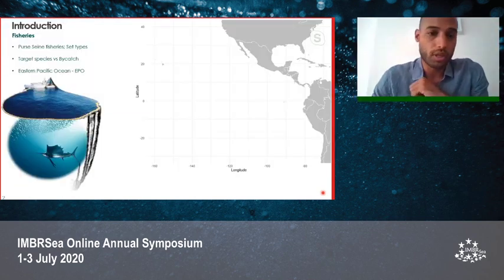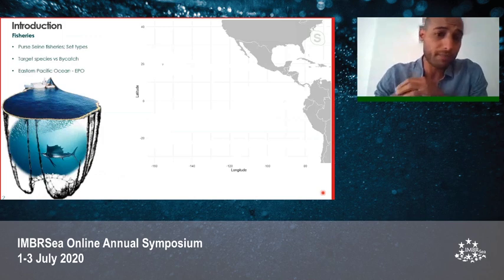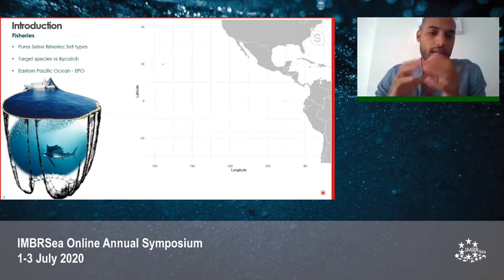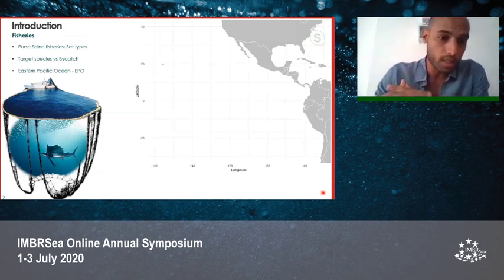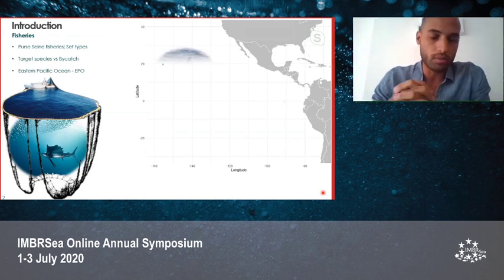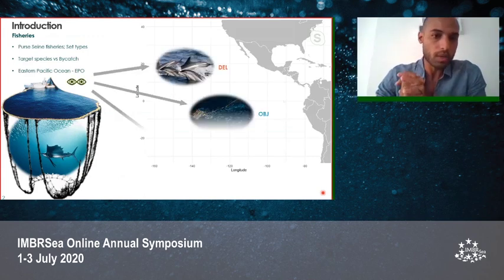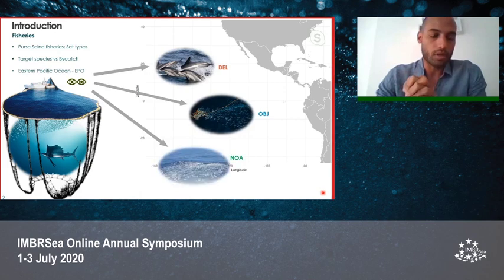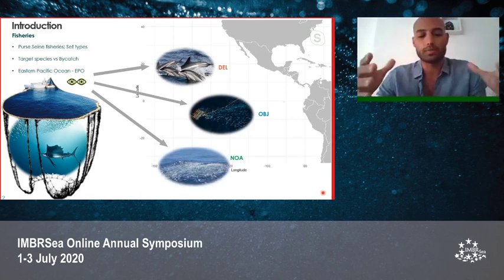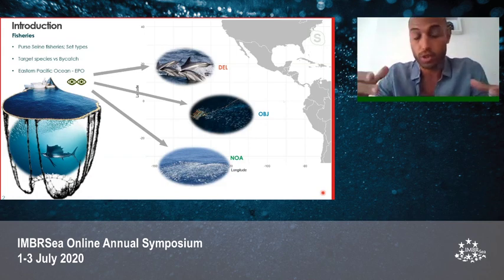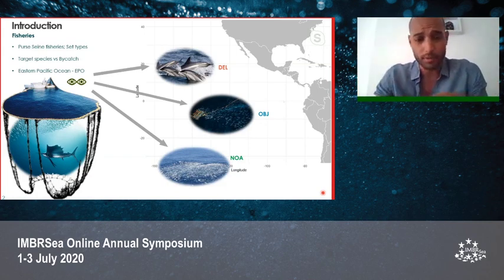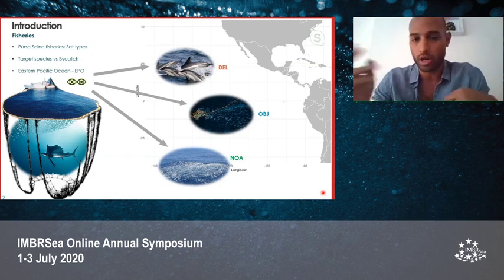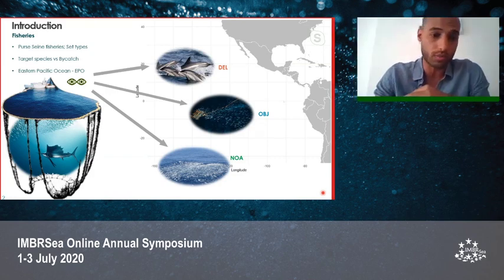For a brief introduction of the purse seine fisheries: it's a main type of fisheries targeting tuna species, with high technology and well-developed worldwide. When the boat surrounds the tuna schools, it also catches other types of species such as sharks, billfishes, or turtles, for example.